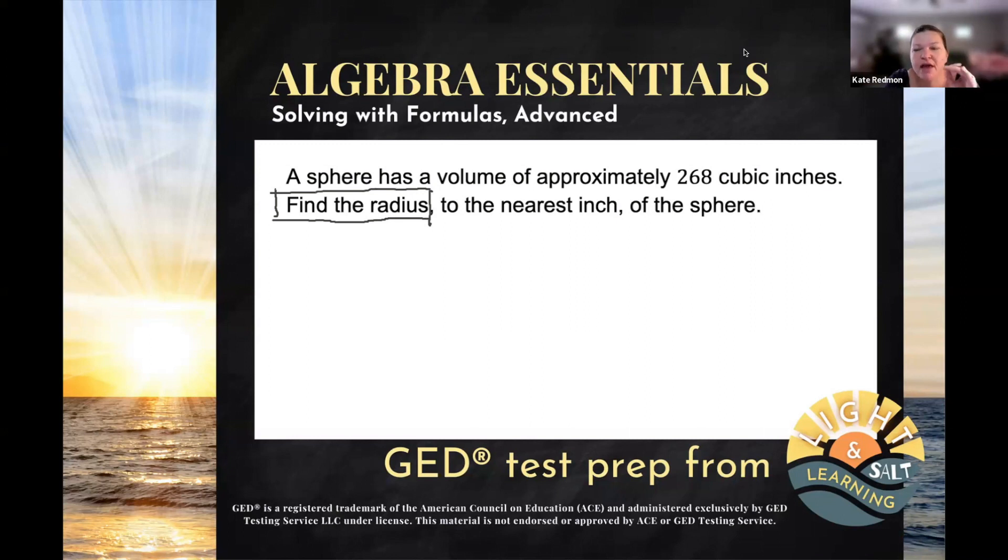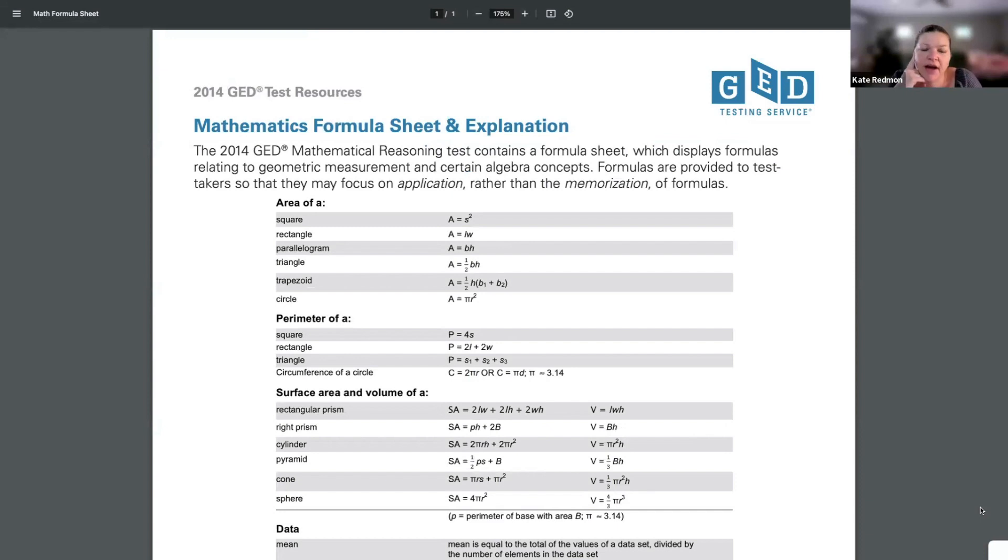However, there is a formula that relates the two things we know about this sphere or the two things they've talked about with this sphere. We've been asked to find the radius, but we know the volume. And there sure is a formula that relates the volume of the sphere to its radius. Let's go ahead and take a look at the formula sheet so we can see that.